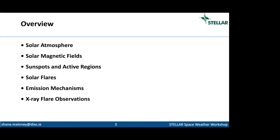The first section covers the solar atmosphere, which will hopefully dovetail nicely with what Peter presented, though with a slightly different focus — more on the observational side and what things tell us about the solar atmosphere. Then we move on to solar magnetic fields, sunspots and active regions, solar flares, and finally emission mechanisms, particularly hard X-ray emission mechanisms, finishing with some X-ray flare observations.